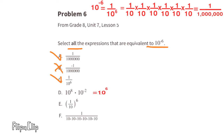Answer D is 10⁸ times 10⁻². Using exponent rules: 8 minus 2 equals 6, giving 10⁶. Since that's not the same as 10⁻⁶, we do not select D.